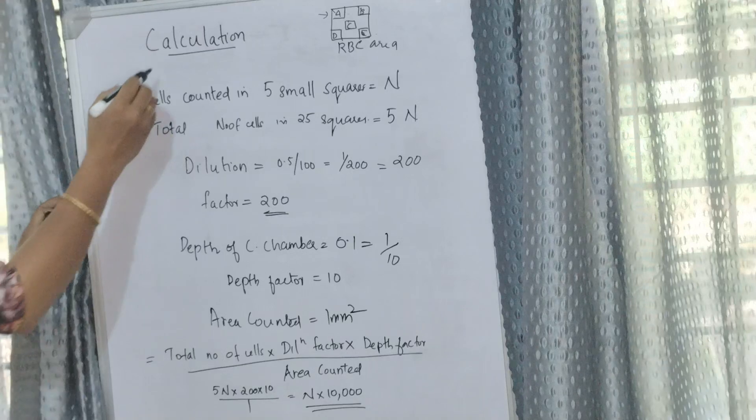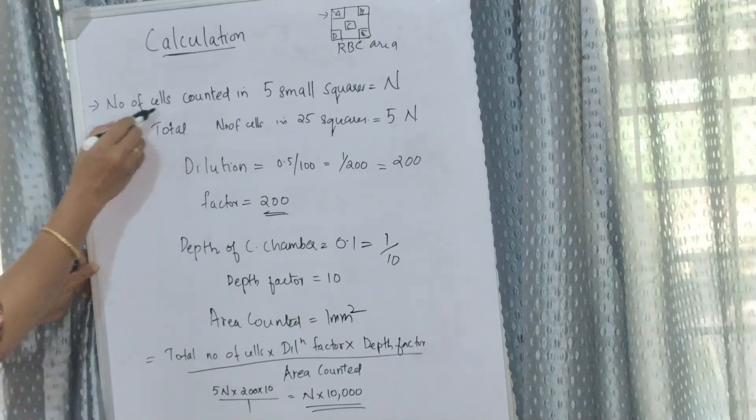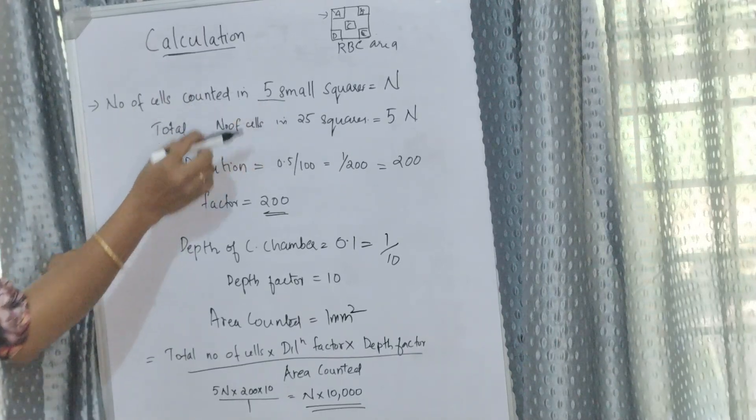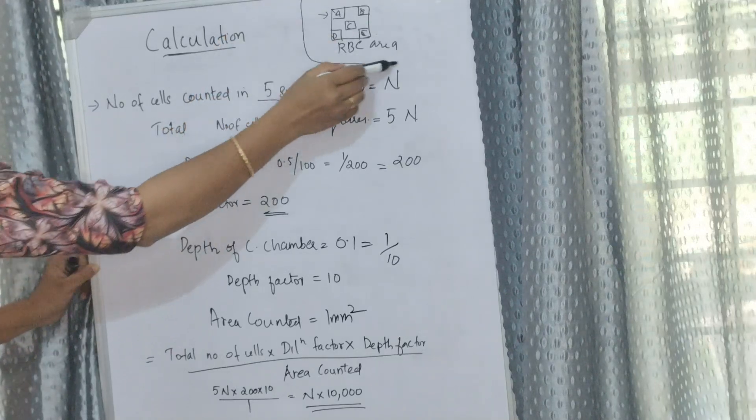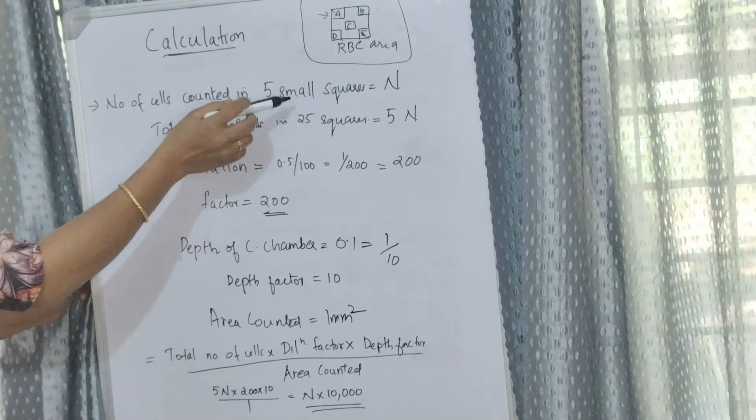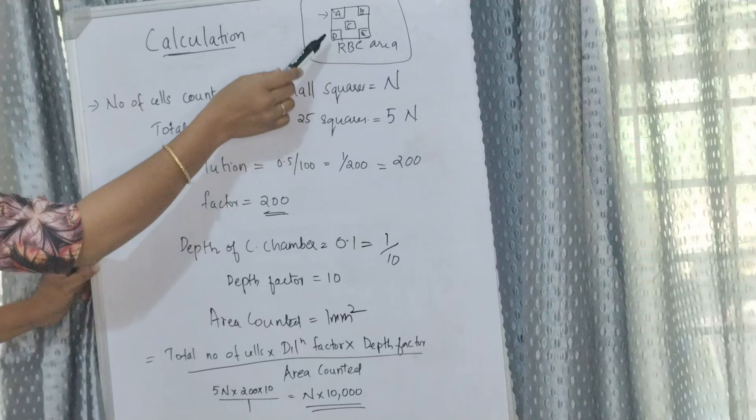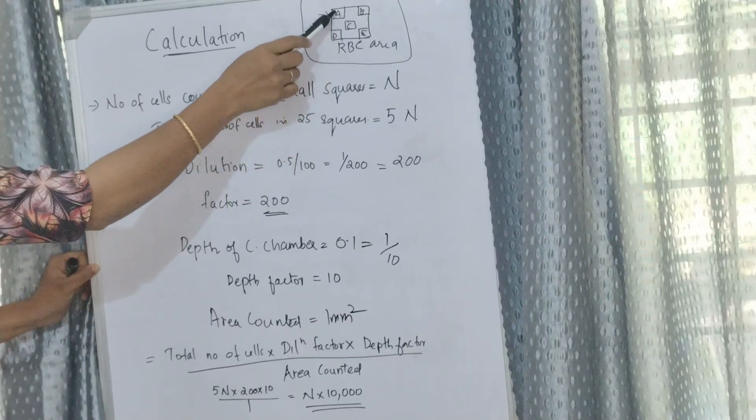Calculation of RBC count: We know that the central square is used for RBC counting. The central square, of which four corner squares and the central small square, is used for counting.